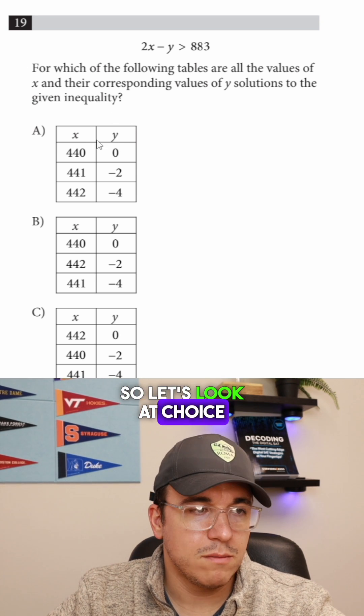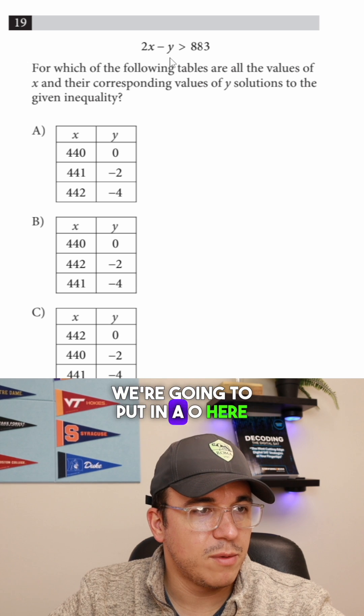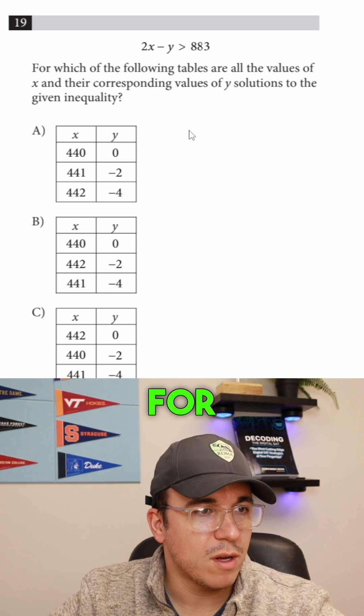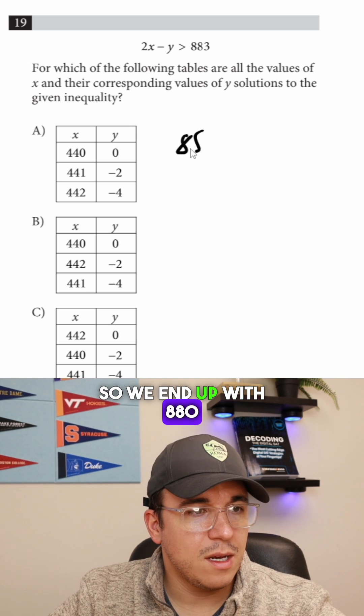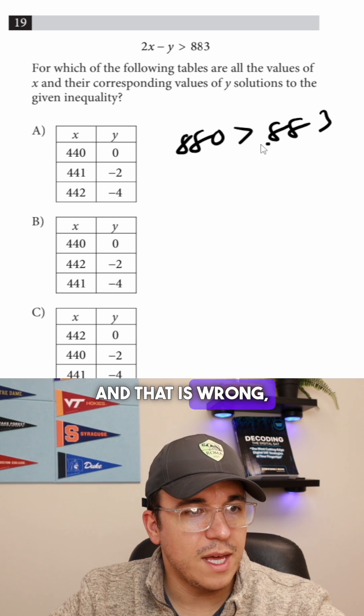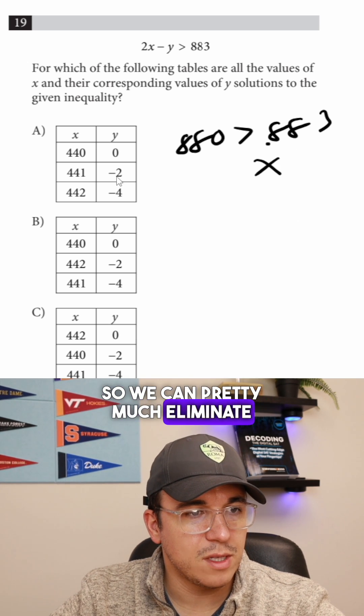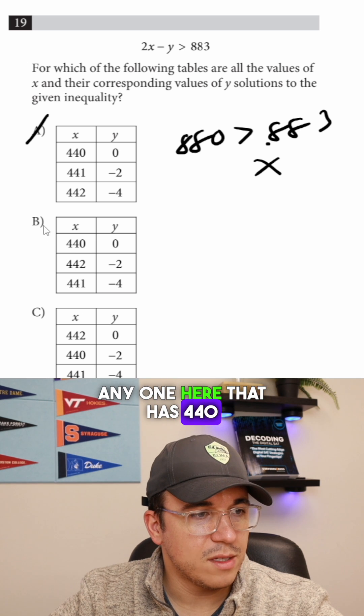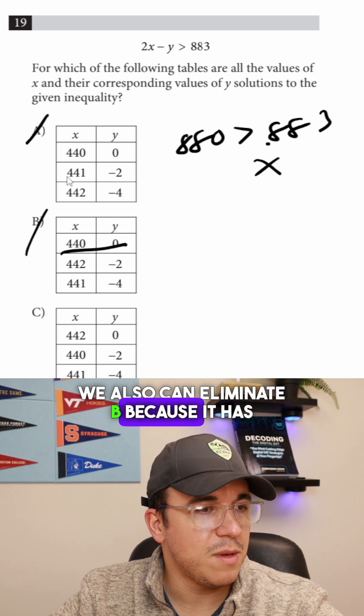So let's look at choice A and the first line. We're going to put in a zero here for y and a 440 for x. So we end up with 880 is greater than 883, and that is wrong. So we can eliminate that, and we also can eliminate B because it has the same value.